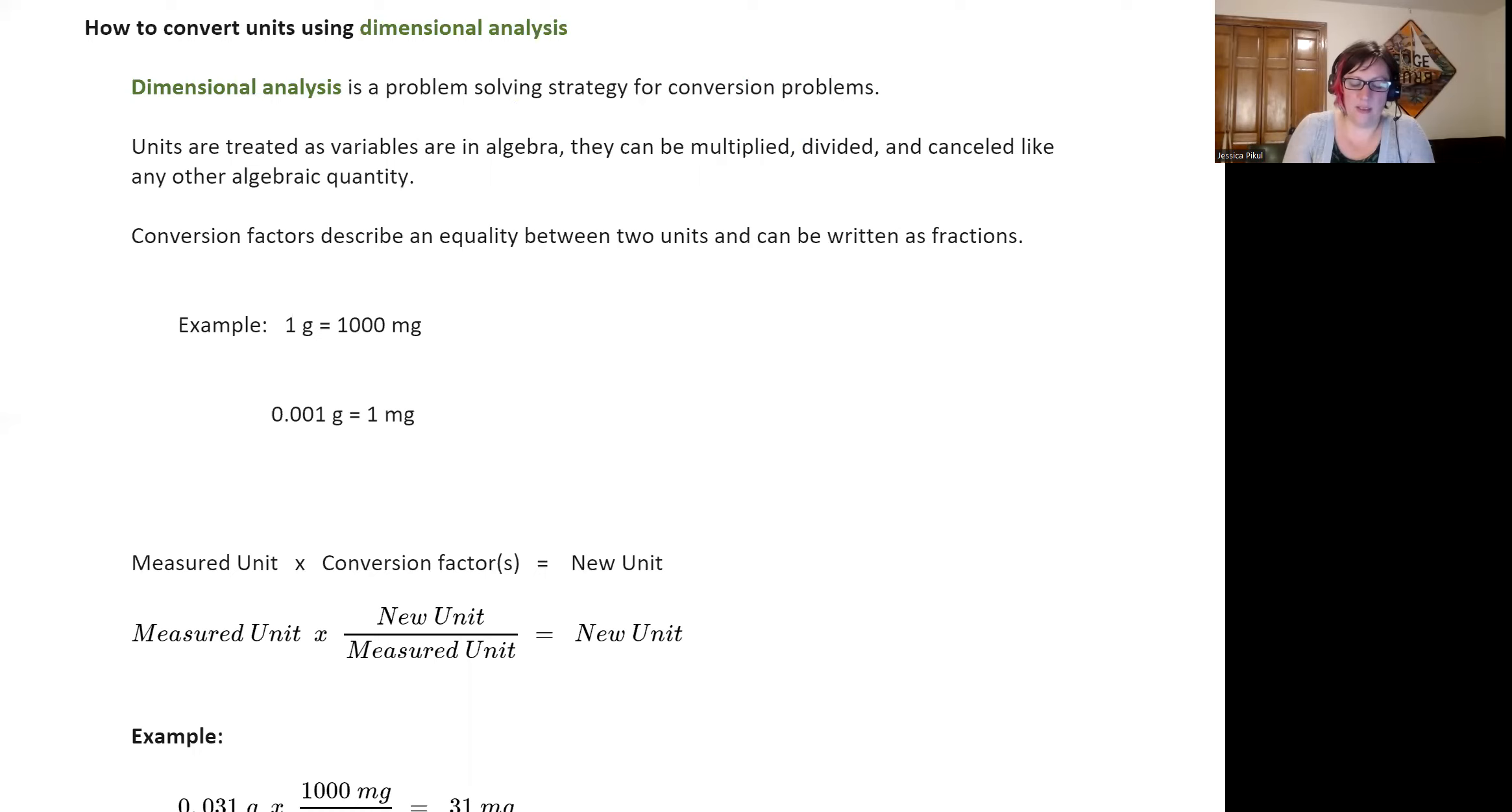So we're using an equality or a conversion factor where one gram is equal to 1000 milligrams. Now we could write this another way and it would mean the exact same thing that 0.001 gram is equal to one milligram. These are essentially the same, and you can plug them into a calculator and kind of figure this out. Like if you do one divided by a thousand, it'll equal 0.001. So we can write conversion factors as equalities, but we can also write them as fractions.